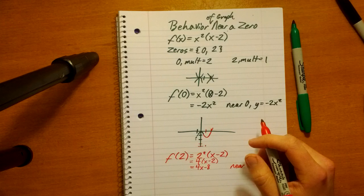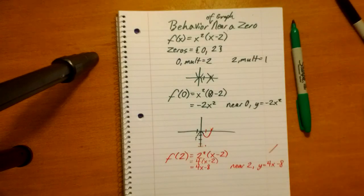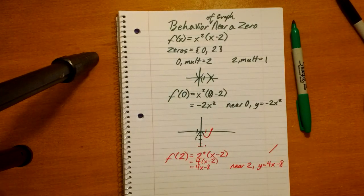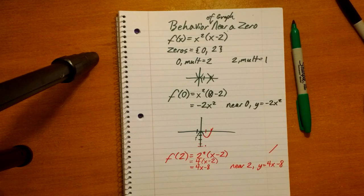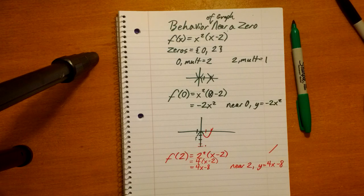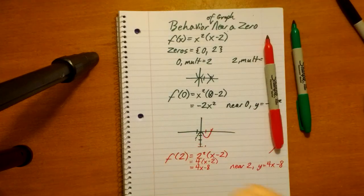Because this is a polynomial function, and that is one of their characteristics. Smooth, continuous lines. And that is all for this lesson. And you'll have to stay tuned to find out what happens with the end behavior.